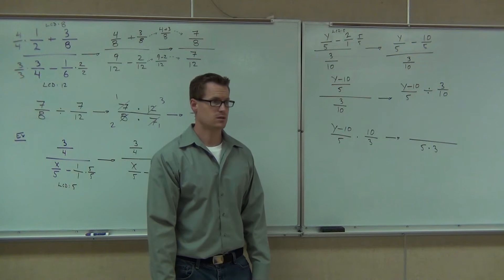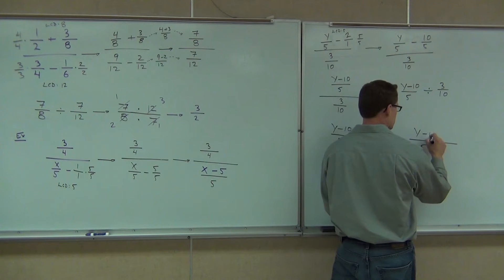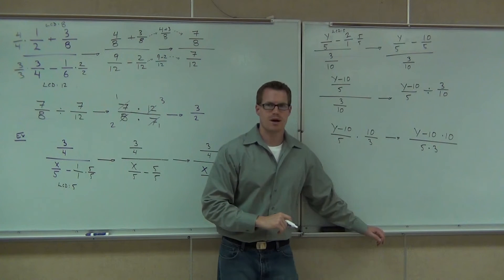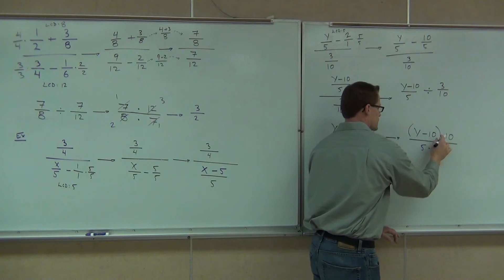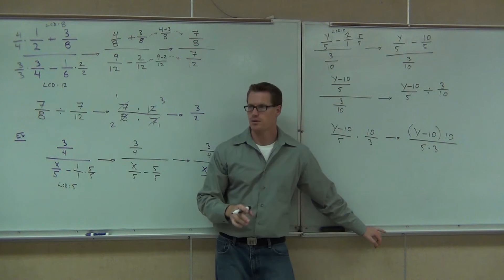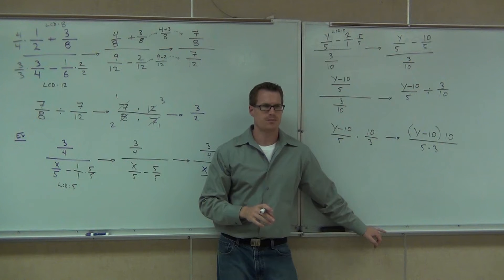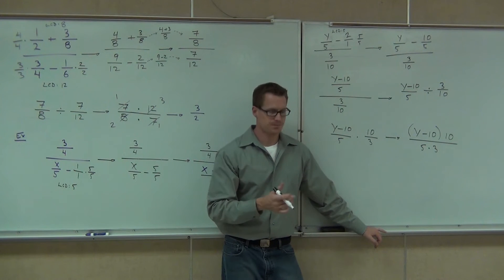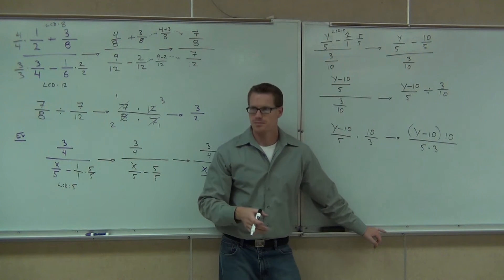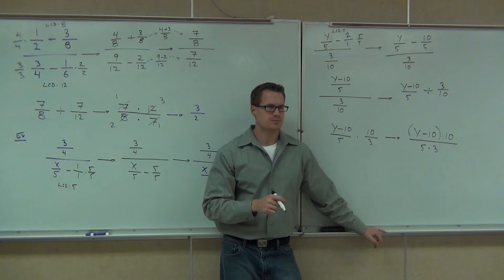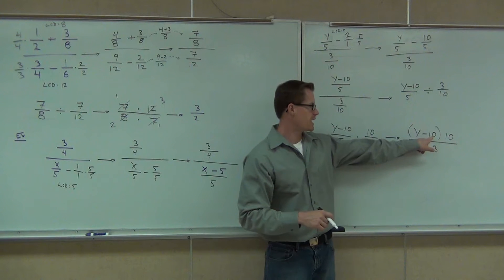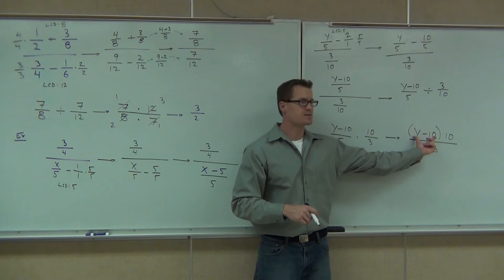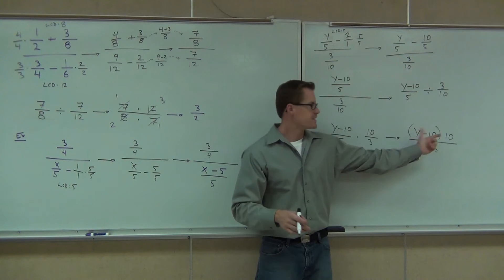If you just write y minus 10 without parentheses times 10, that means y minus 100 — that is not what you want. What this means is (y minus 10) times 10. Now, this part is key: when you simplify things, you're simplifying items that are being multiplied together over items that are multiplied together. You can't ever simplify something that's being subtracted or added. So in our case, we could not simplify this 10 with this 5 — do you see why? This one is connected by subtraction.